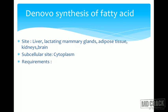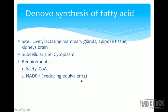For the synthesis of fatty acids we require acetyl-CoA and NADPH. NADPH provides the reducing equivalents. NADPH does not provide energy — it is formed in the HMP shunt pathway. Glucose-6-phosphate dehydrogenase and 6-phosphogluconate dehydrogenase are the two important enzymes which produce NADPH. So we have an absolute requirement of acetyl-CoA and NADPH.